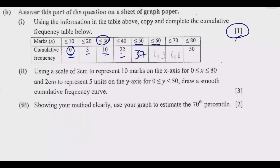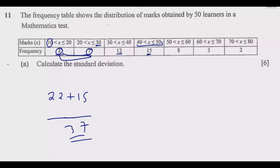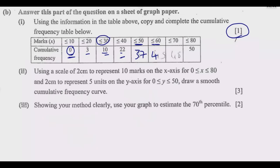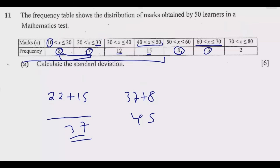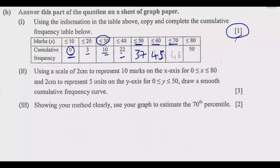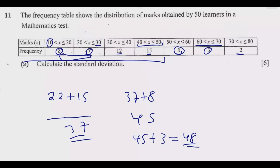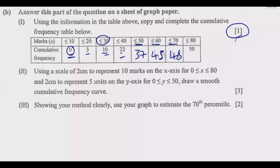Continuing the cumulative frequency table: below 60 we have 37 + 8 = 45; below 70 we have 45 + 3 = 48; and below 80 we have 48 + 2 = 50. Once you get to 50 — which matches the total number of learners — the table is complete.